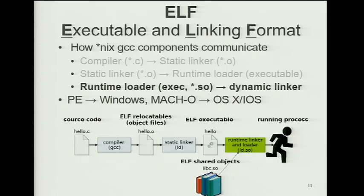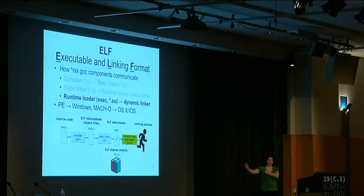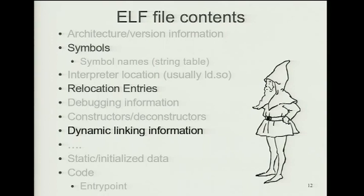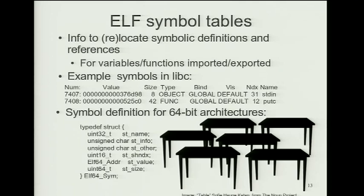Thinking about the toolchain: we start with source code, invoke GCC and get an ELF object which is a relocatable file, then run the static linker among different object files and end up with an executable or a library. The part I'm focusing on is when this executable is being loaded and other libraries are being loaded before it's run — before the entry point of this executable is jumped into. There are lots of different components to ELF files, but I will only look at symbols, relocation entries, and dynamic linking, because those are the three types of metadata we work with.